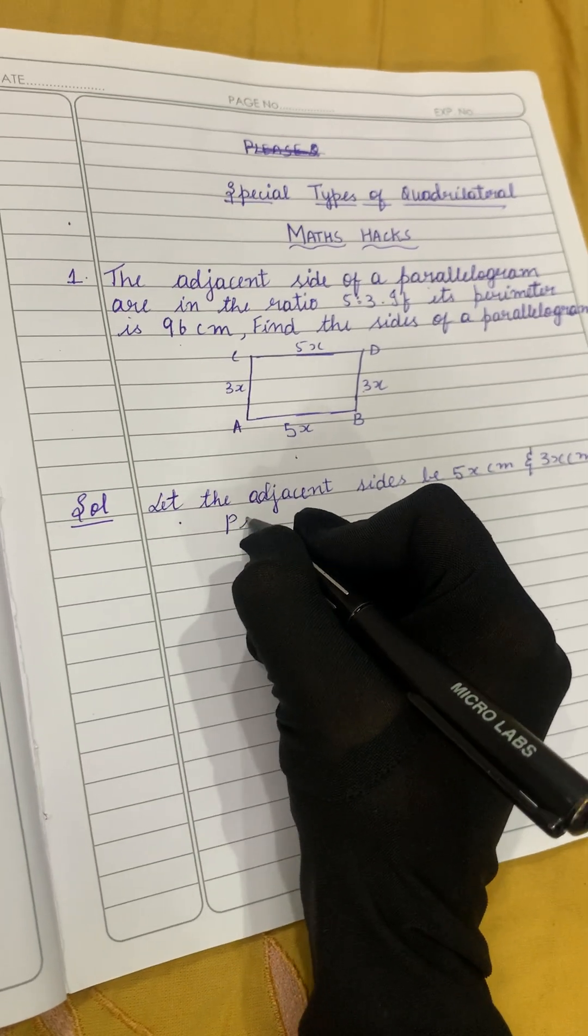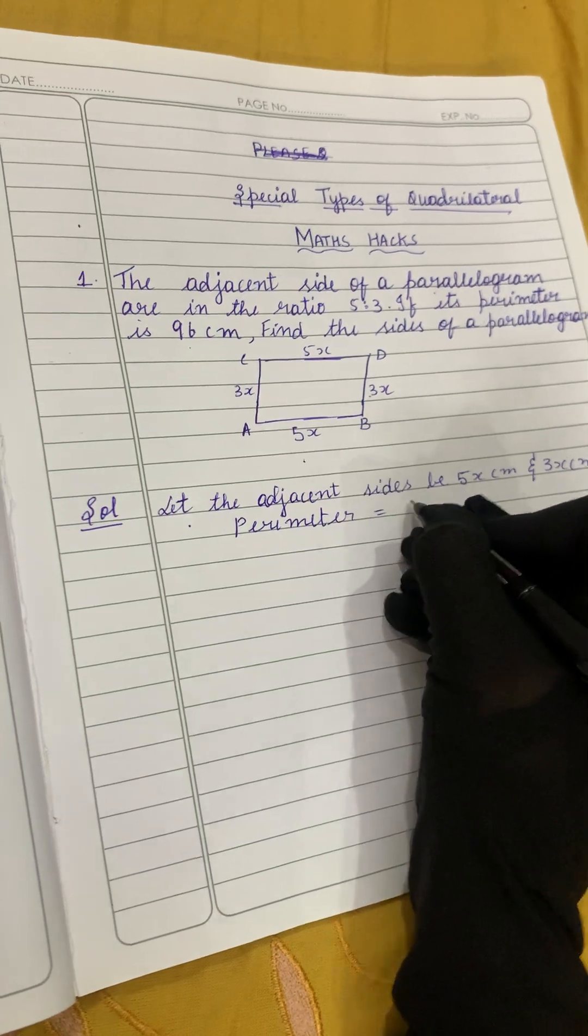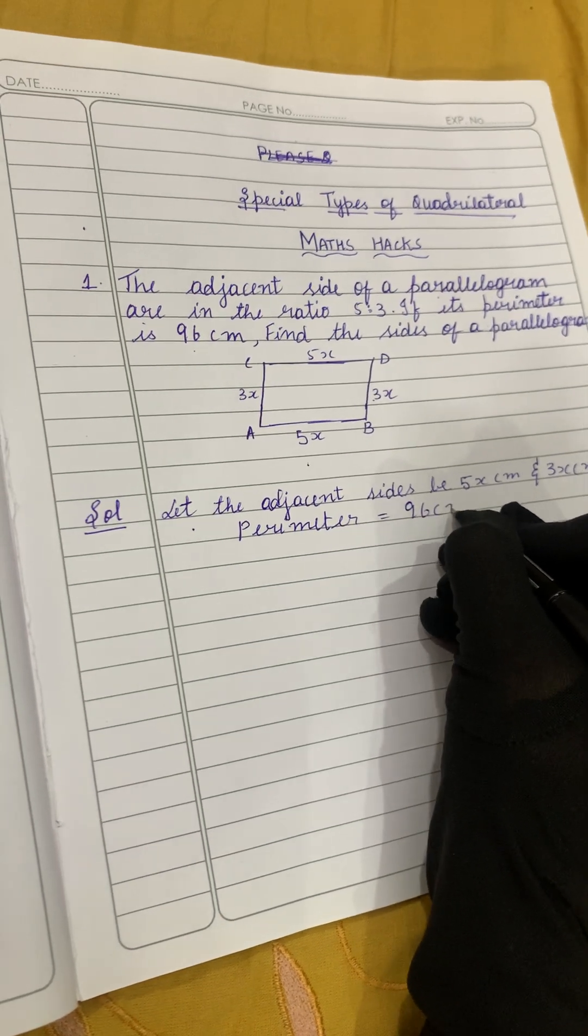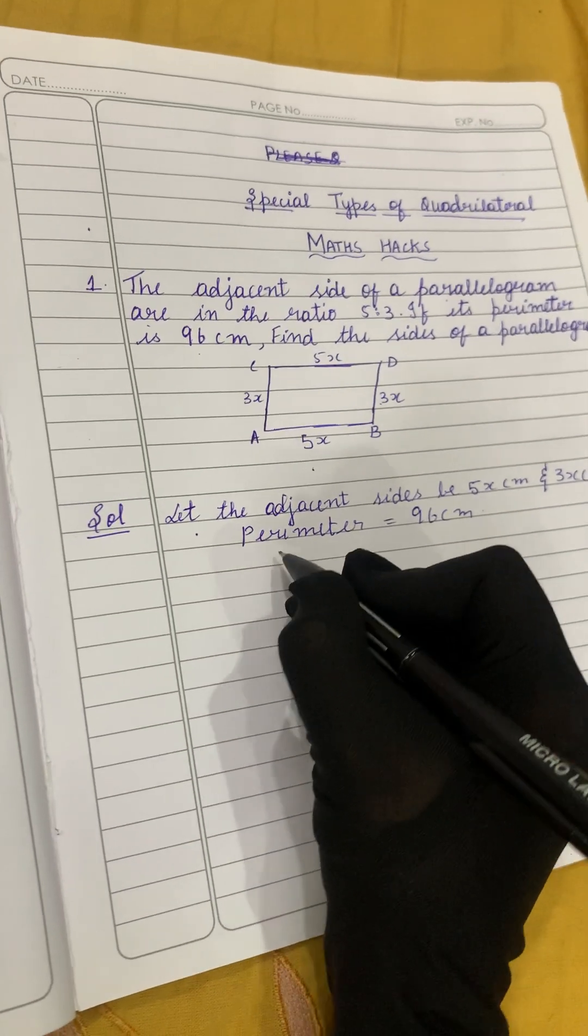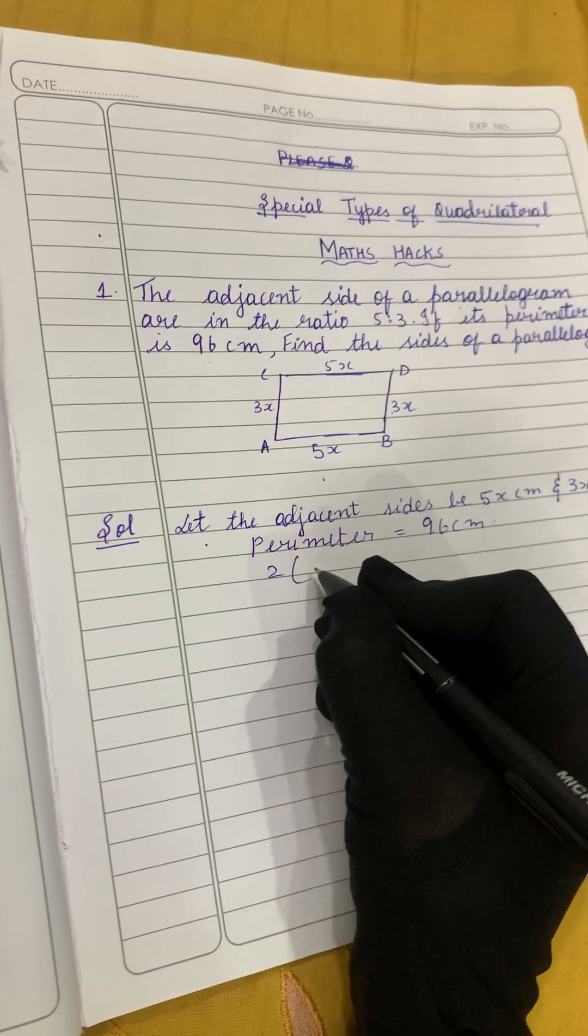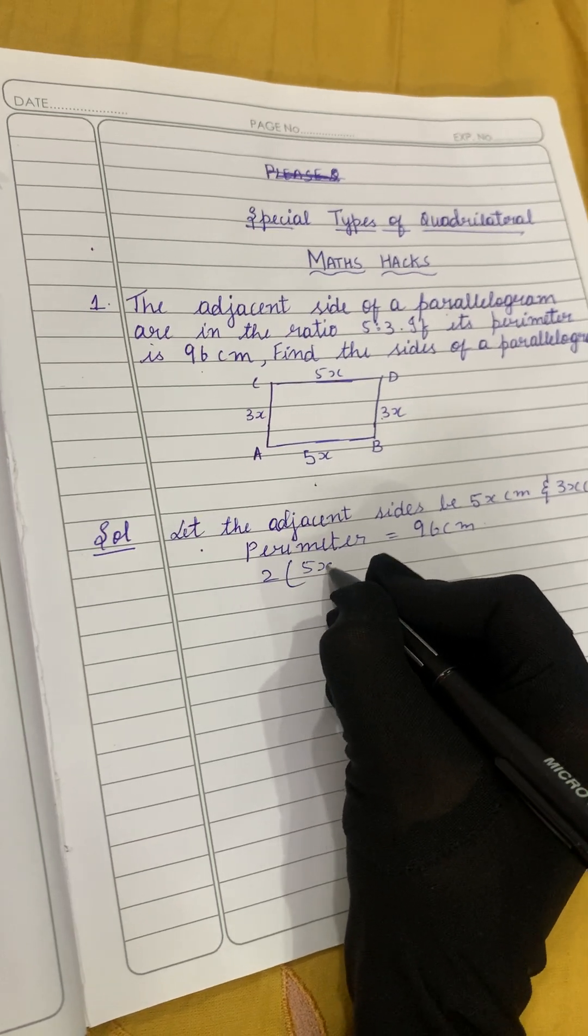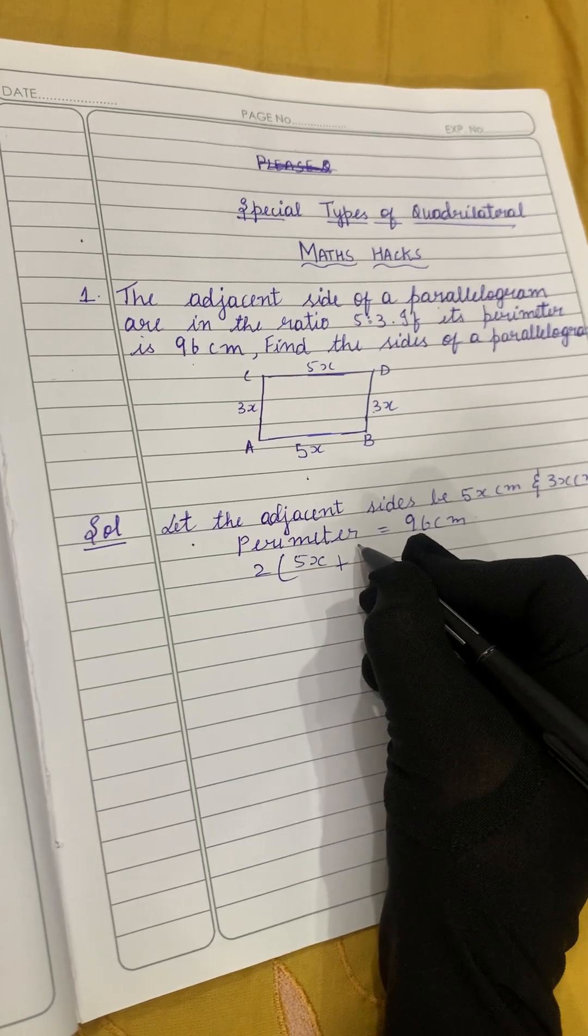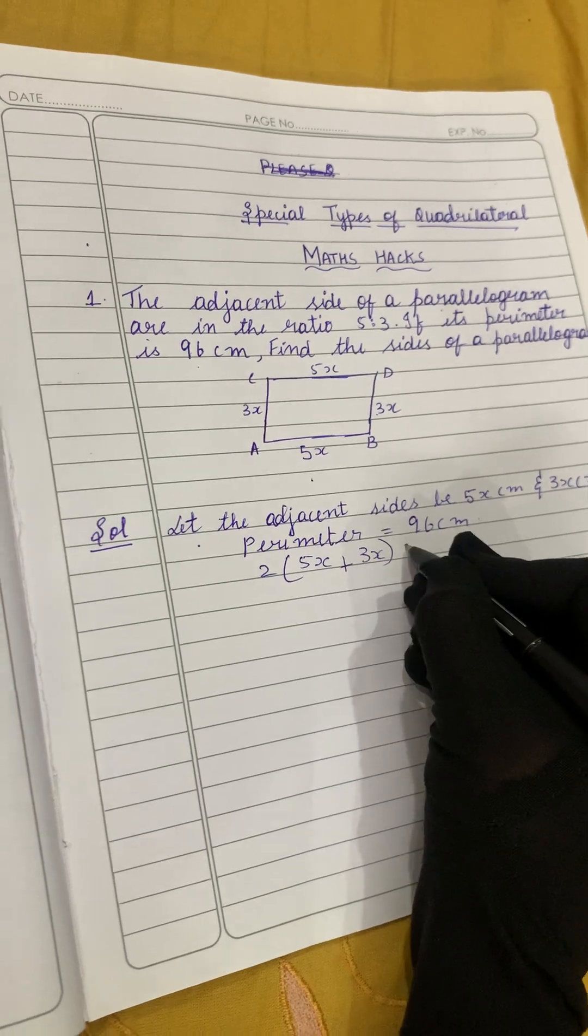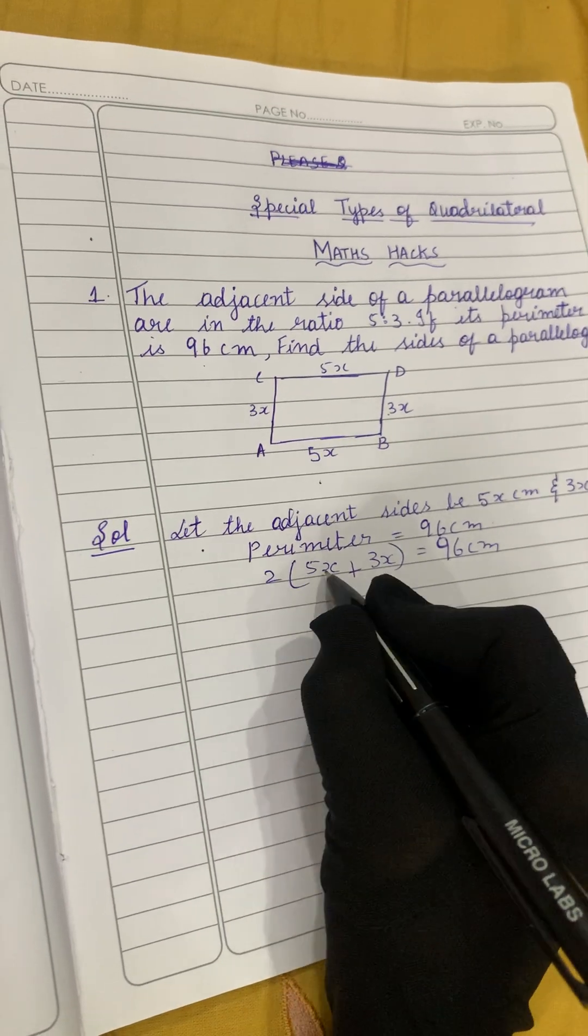How much is the perimeter given in the question? The perimeter is equal to 96 centimeters. Now let's apply the formula: 2 times length plus breadth. So 2 into length, how much is the length? It's 5x. We'll write 5x plus breadth is 3x equals perimeter 96 centimeters.